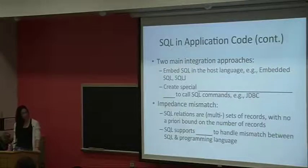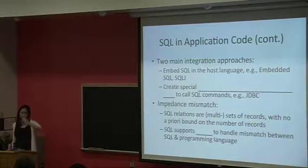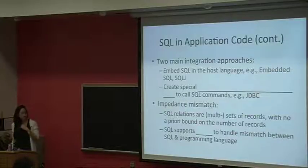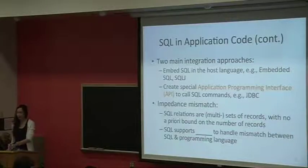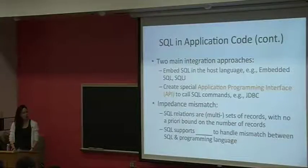There are two main approaches to put SQL with your application together. The first is to embed SQL in the host language — you directly have code that looks exactly like what we do in SQL and put it into your host language program. The second approach is creating a special application programming interface, an API. So instead of directly embedding SQL code into your host language program, you use an API instead.